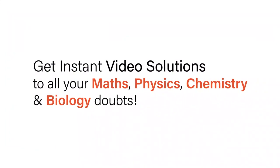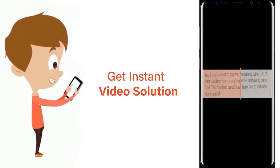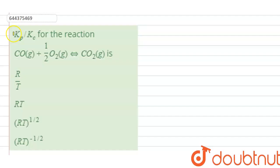With Doubtnut get instant video solutions to all your maths, physics, chemistry and biology doubts. Just click the image of the question, crop the question and get instant video solution. Download Doubtnut app today. The question is the Kp by Kc for the given reaction.